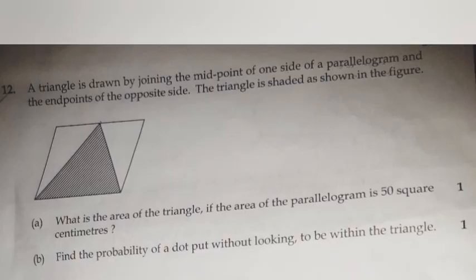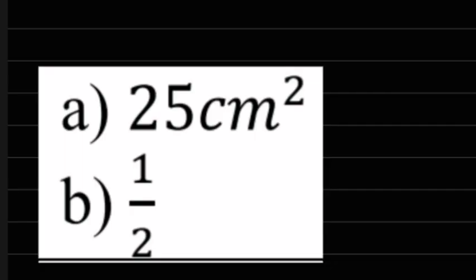Question 12: A triangle is drawn by joining the midpoint of one side of a parallelogram and the endpoints of the opposite side. The triangle is shaded as shown in the figure. A: What is the area of the triangle if the area of the parallelogram is 50 square cm? B: Find the probability of a dot put without looking to be within the triangle. Answer A: 25 square cm. Answer B: 1 by 2.